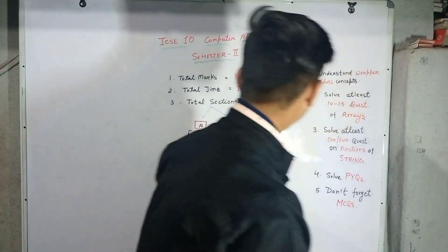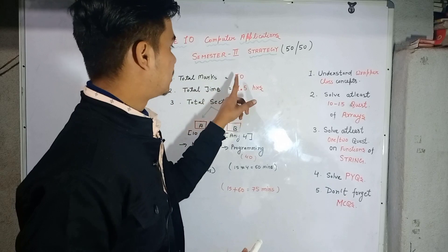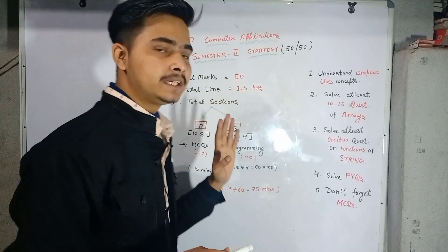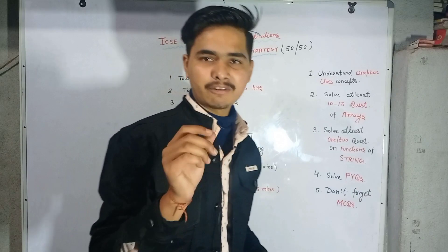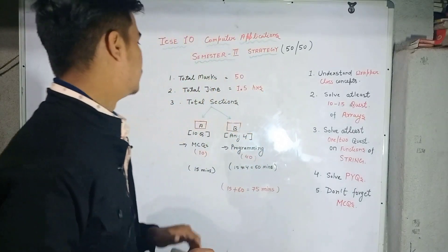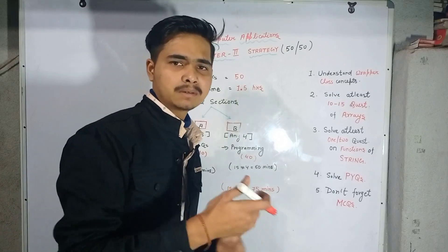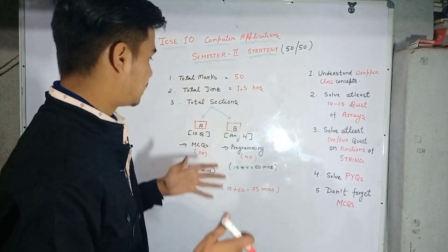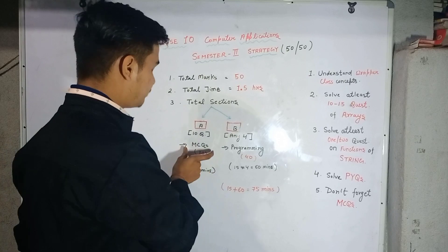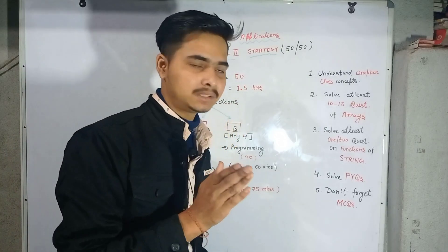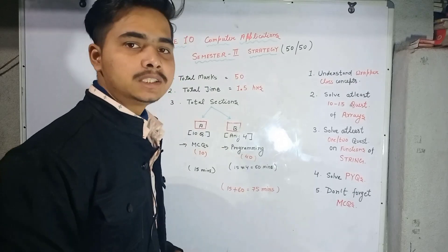Let me pick up a marker. First, where our computer application is concerned, it comprises 50 marks and you will be given a time of one and a half hours, which is an efficient time. You have two sections here — Section A and Section B. Section A is MCQ type and there are a total of 10 MCQs. Section B is 40 marks.